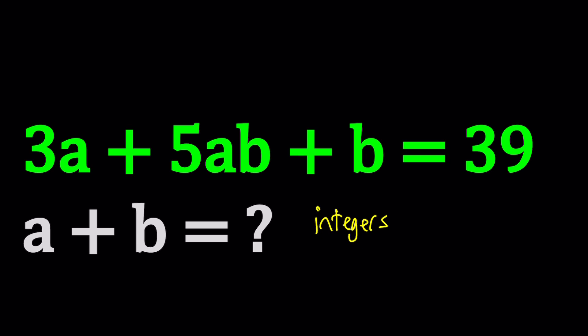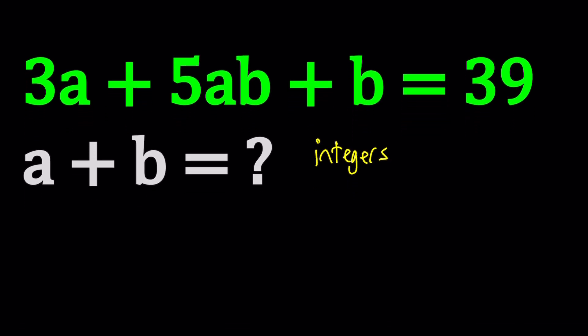I'll try to present two different approaches. So first method, I'm going to factor out something. Now obviously these two terms have a common factor. And I kind of want to start with the product of two variables. Maybe write it like this: 5ab plus 3a plus b equals 39.